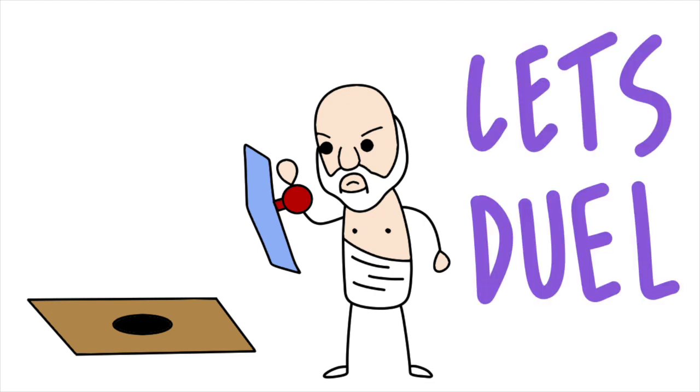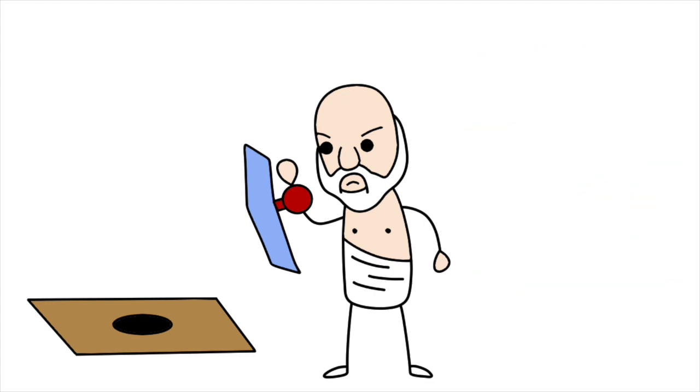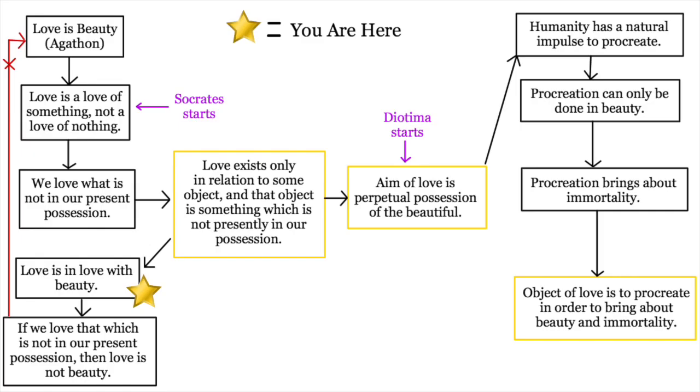Now this is where Socrates activates his trap card. Working off of Agathon's conclusion that love is beauty, Socrates asks, okay, if that's so, love is in love with beauty and not in love with ugliness, right? Agathon agrees. Socrates then returns to their premise that love is being in love with something that he does not possess. Agathon agrees as he already had. Then it follows that love lacks and does not possess beauty. And because, as Socrates says, you wouldn't call something that lacks beauty beautiful. Love is therefore not beauty. Agathon concedes his conclusion.